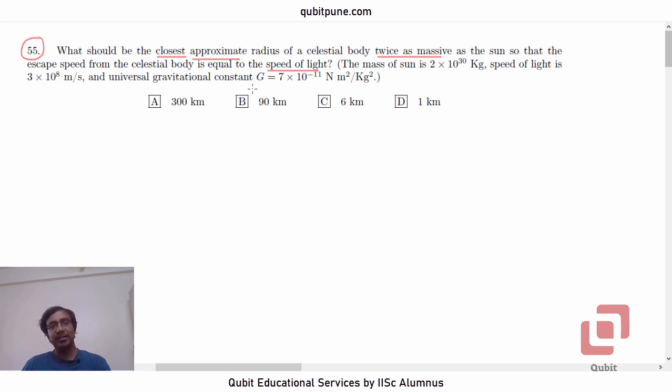And universal gravitational constant G is 7×10^-11 Nm²/kg². The value of the radius: in option A is 300 km, in B 90 km, in C 6 km, and in D 1 km.